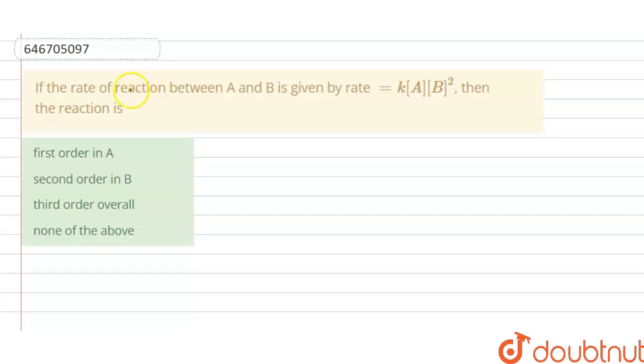Hello students, today our question is if the rate of reaction between A and B is given by rate equals K, that is the rate constant, concentration of A and B, that is concentration of A is 1 and B is 2, then the reaction is first order in A, second order in B, C is third order overall, none of above. So we have to give the correct option.